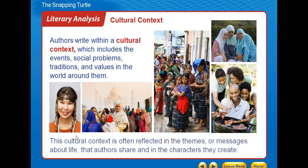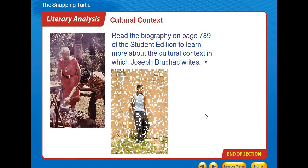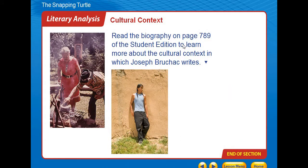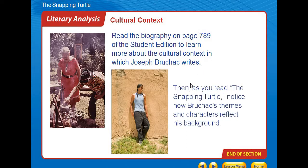We learned how racism was growing in America, how people were affected by it. This cultural context is often reflected in the themes or messages about life that authors share through the characters they create. Read the biography in the student edition to learn more about the cultural context in which Joseph Bruchac writes, and notice how his themes and characters reflect his background.